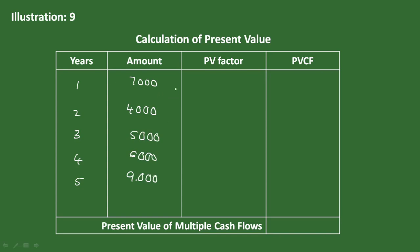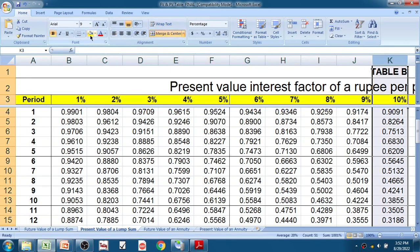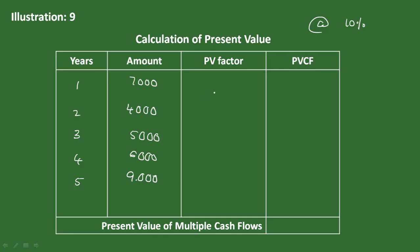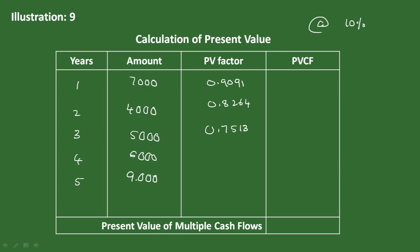This is a single cash flow present value factor — now find it from the book. At the rate of 10 percent interest, the present value interest factor for each year: first year 0.9091, second year 0.8264, third year 0.7513, fourth year 0.6830, and fifth year 0.6209. These are the present value factors for individual cash flows.